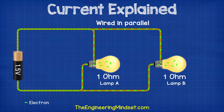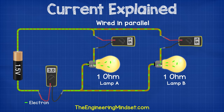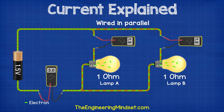If we now connect the circuit with two lamps in parallel, both with a resistance of one ohm, connected to a battery of 1.5 volts, then in the main wire to and from the battery we get three amps. But on the branch of each lamp we get 1.5 amps. That's because the path of the electrons has split — some flowing through lamp A and some flowing through lamp B. In this example, both lamps have equal resistance so the current is split equally. But if the lamps are of different resistance, then the current is split unequally.